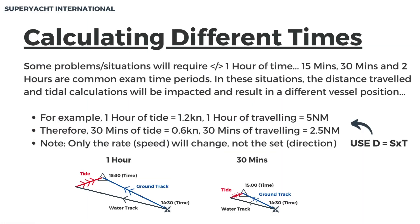Some problems will require less or more than one hour of time. In these situations, the distance traveled and tidal calculations will be impacted. For example, one hour of tide could be 1.2 knots, and therefore 30 minutes would only be 0.6 knots. Similarly, one hour of traveling could cover 5 nautical miles, and therefore 30 minutes of traveling would only be 2.5 nautical miles. Note: only the rate will change and not the set for less than one hour.